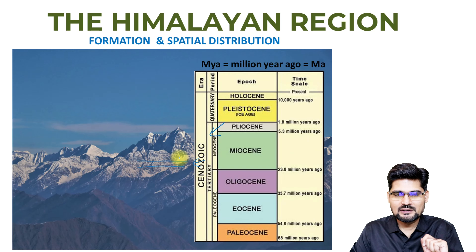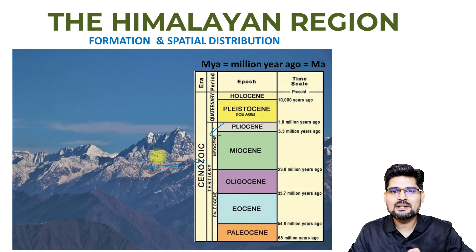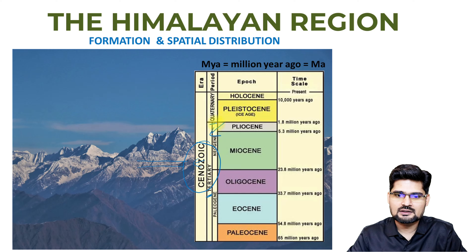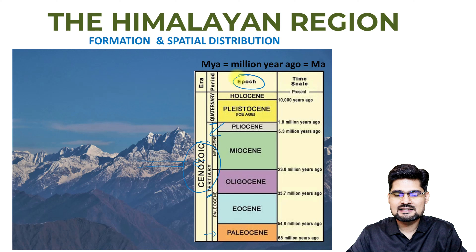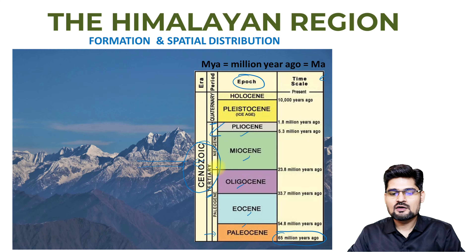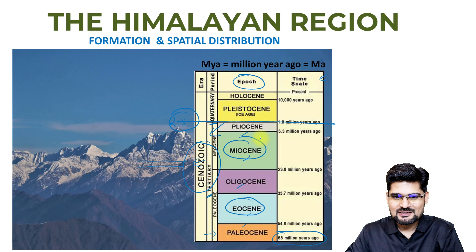First, let's have a recap of the geological time scale, where Himalayan formation will be dealt with. We are in the Cenozoic era, and under it you have Tertiary and Quaternary periods. The Himalayan formation starts in the Tertiary period, with epochs: Paleocene, Eocene, Oligocene, Miocene, Pliocene — from 65 million years ago till present. The Pleistocene, roughly 2.5 million years ago, is known for the Ice Age and the arrival of humans; Holocene is associated with modern humans.